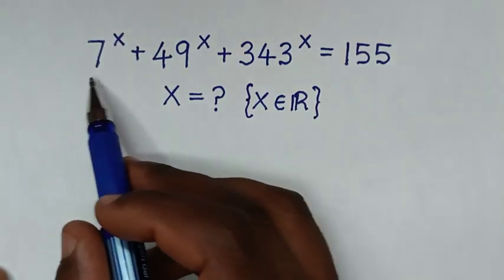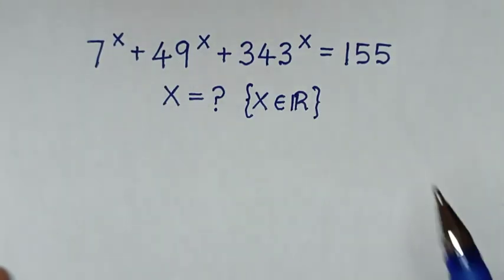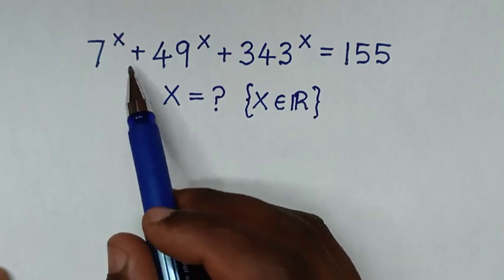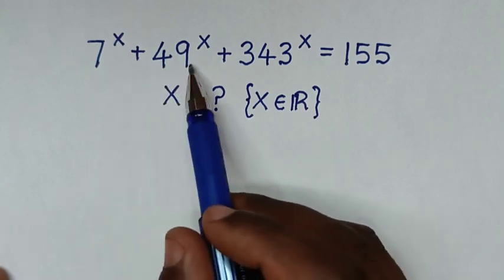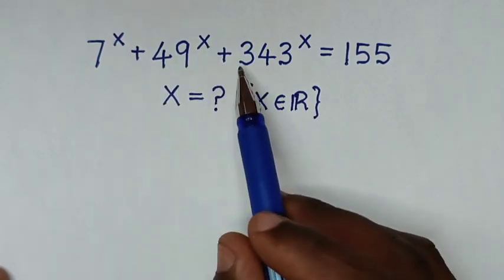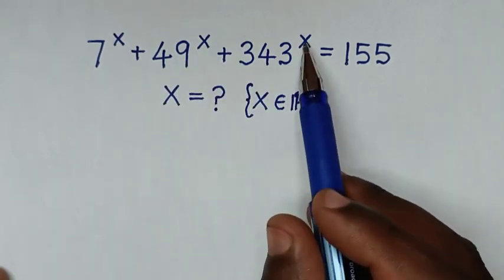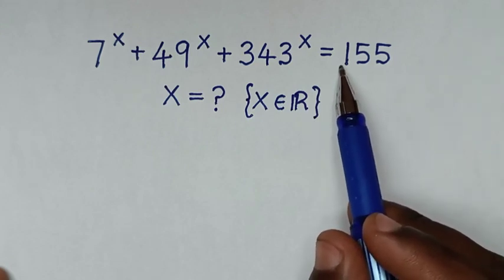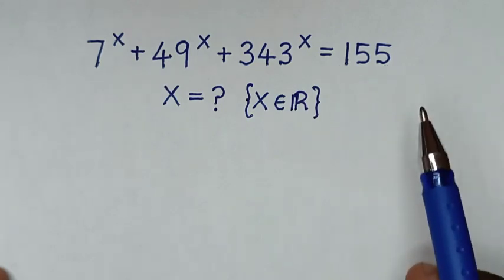Welcome. We are going to solve this math problem: 7 power x plus 49 power x plus 343 power x is equal to 155.